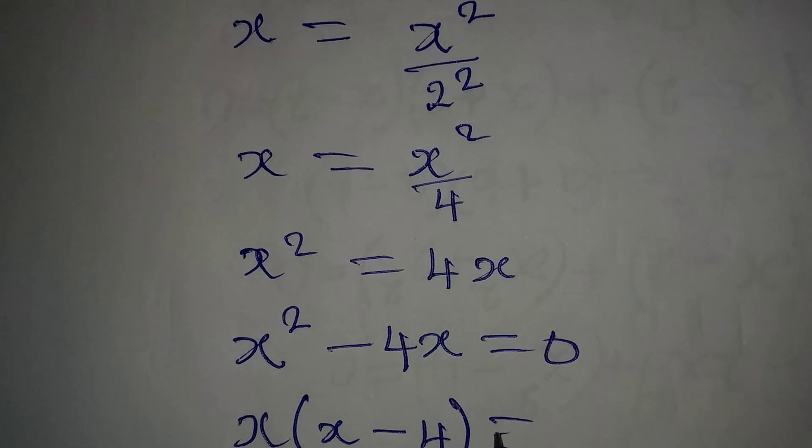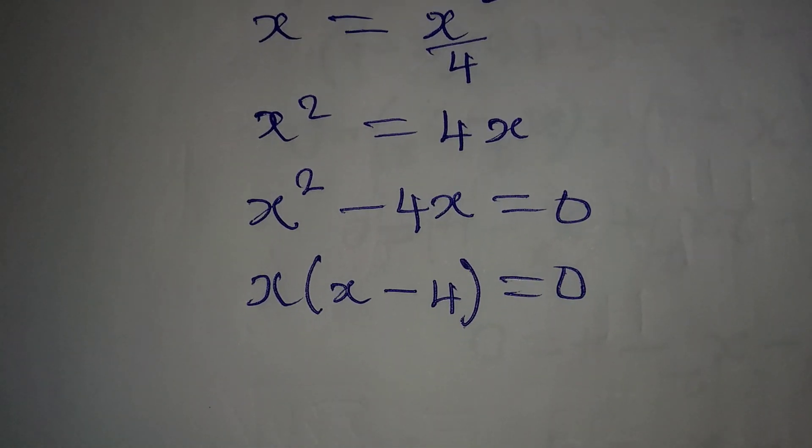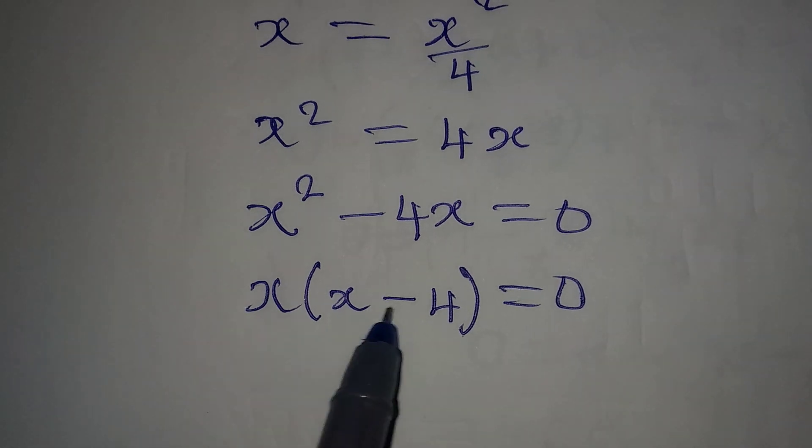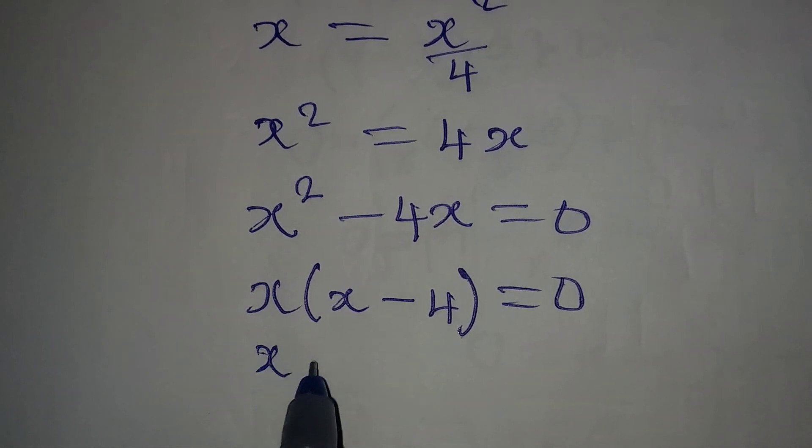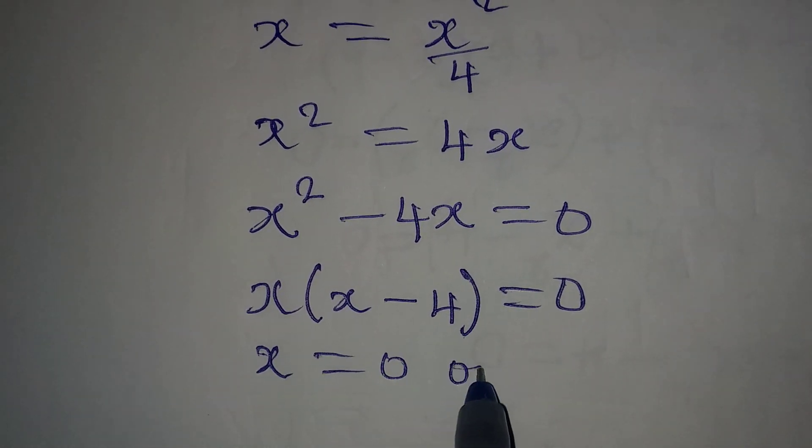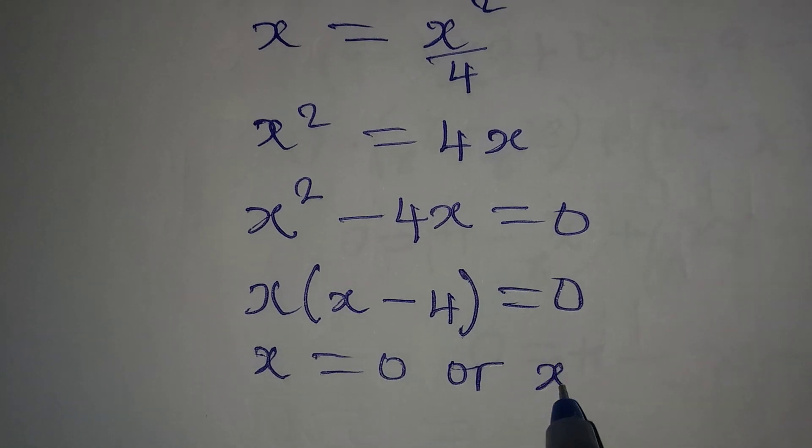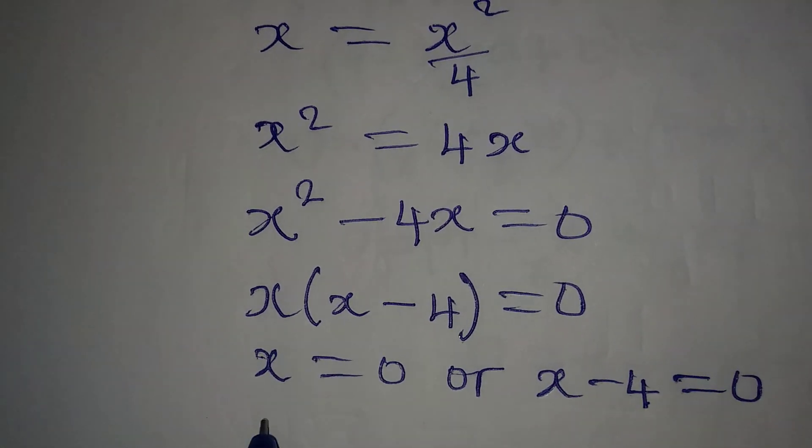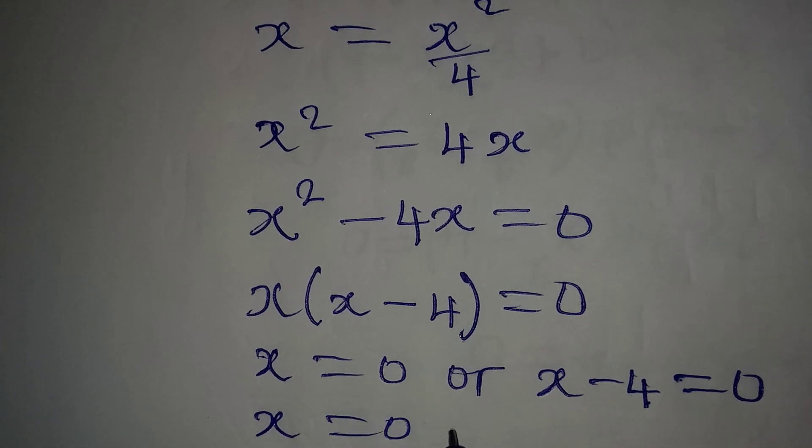This is now equal to 0. Apply your zero product rule. It is either x = 0 or what we have in the bracket, x - 4 = 0.